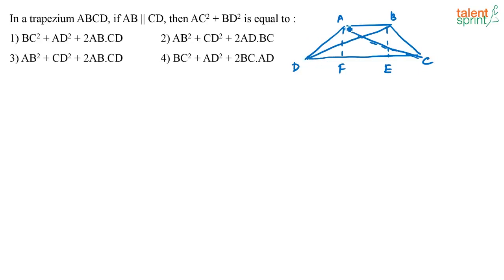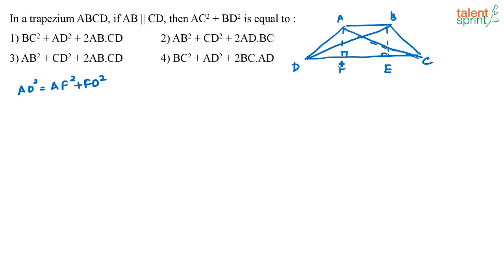This is a perpendicular that I am dropping, so this is a right angle. If I consider triangle ADF, I can say that AD squared is equal to AF squared plus FD squared — basic Pythagoras theorem applied to right-angle triangle ADF.